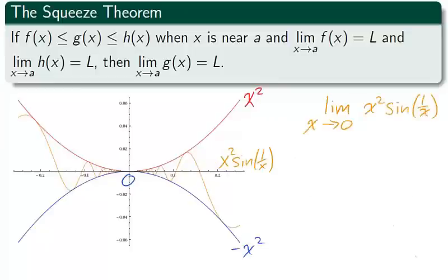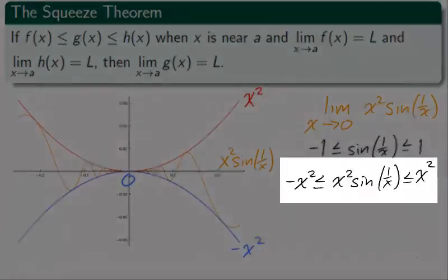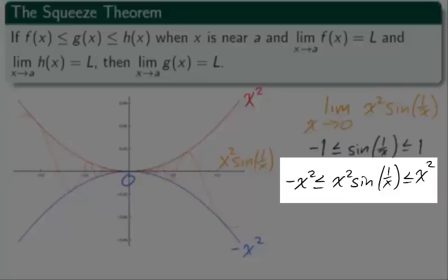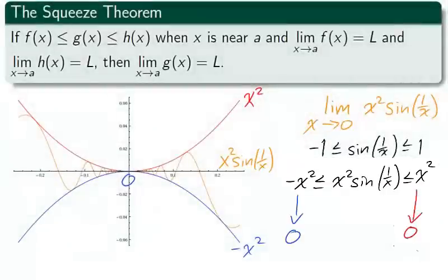This graph actually depicts the squeeze theorem on x squared sine 1 over x as x approaches 0. As sine is a function naturally bounded by 1 and negative 1, we can take the natural bound of sine by 1 and negative 1 and multiply it by x squared. What we have is three functions, x squared on top of x squared sine 1 over x on top of negative x squared. As x squared and negative x squared go to 0 as x approaches 0, the middle function is squeezed towards 0.